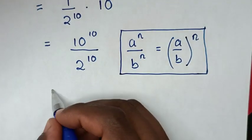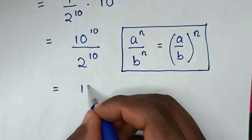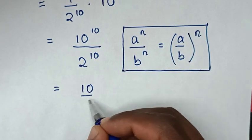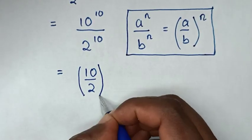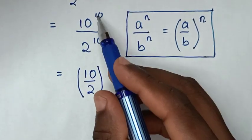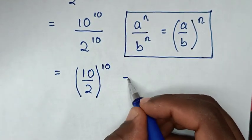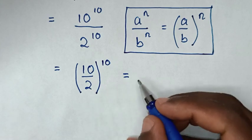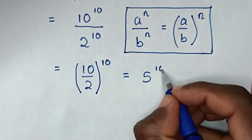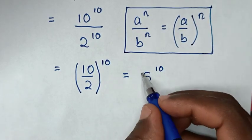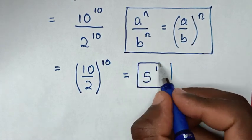So it will be equal to (10 over 2), bracket, same power of 10, which is equal to — 10 divided by 2 is 5, power of 10. So, 5 power of 10 is our final answer.